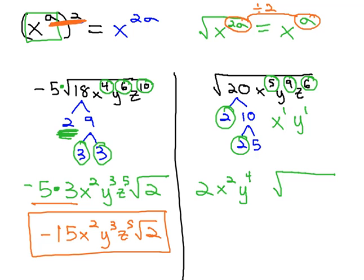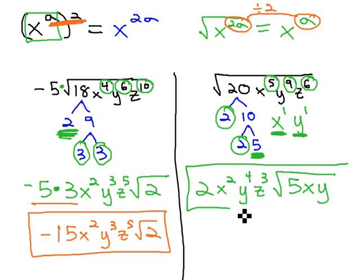Z to the 6th, dividing 6 by 2, we get z cubed, with none remaining inside because there is no remainder. This means what we have left inside the radical is a 5, an x, and a y. With nothing to multiply, this becomes our final solution: 2x squared, y to the 4th, z cubed, times the square root of 5xy.